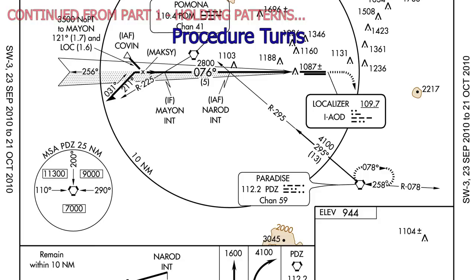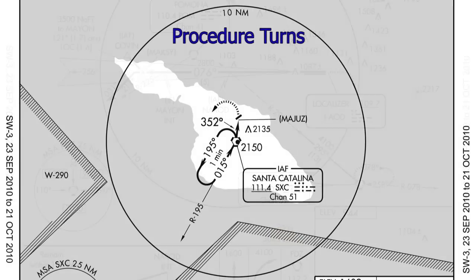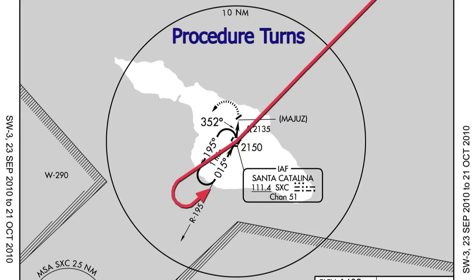When it comes to procedure turns, we need to know two things. First, we need to know when to do one. And second, once we know that we need to do a procedure turn, which procedure turn do we do? A procedure turn is basically an authorized turn that will put us in a position to do the published approach within the allowed area.